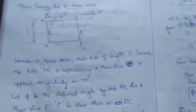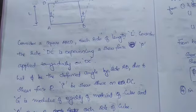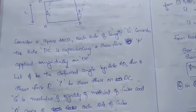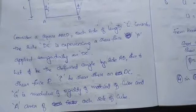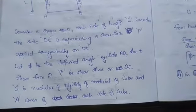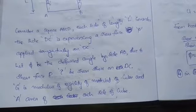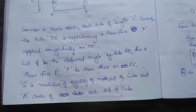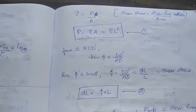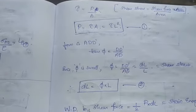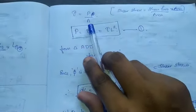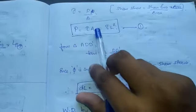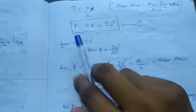Here you consider a square of length L. The side DC is experiencing a shear force P applied tangentially on DC. Phi is the deformed angle, A is the area of its side, G is the modulus of rigidity of the material. Now we know that shear stress is shear force by area, so shear stress here is P by area, which equals tau A equals L square since this is a square.